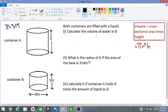Let us solve this problem which involves two cylinders. The problem says both containers are filled with a liquid. Now we have to calculate the volume of water in tank B or container B.